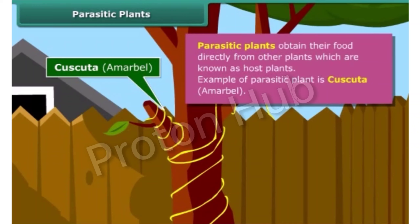Amarbeil coils around the stem and branches as a yellow tubular structure. It does not contain chlorophyll, so it takes ready-made food from the plant on which it is climbing. The plant on which it climbs is called the host.